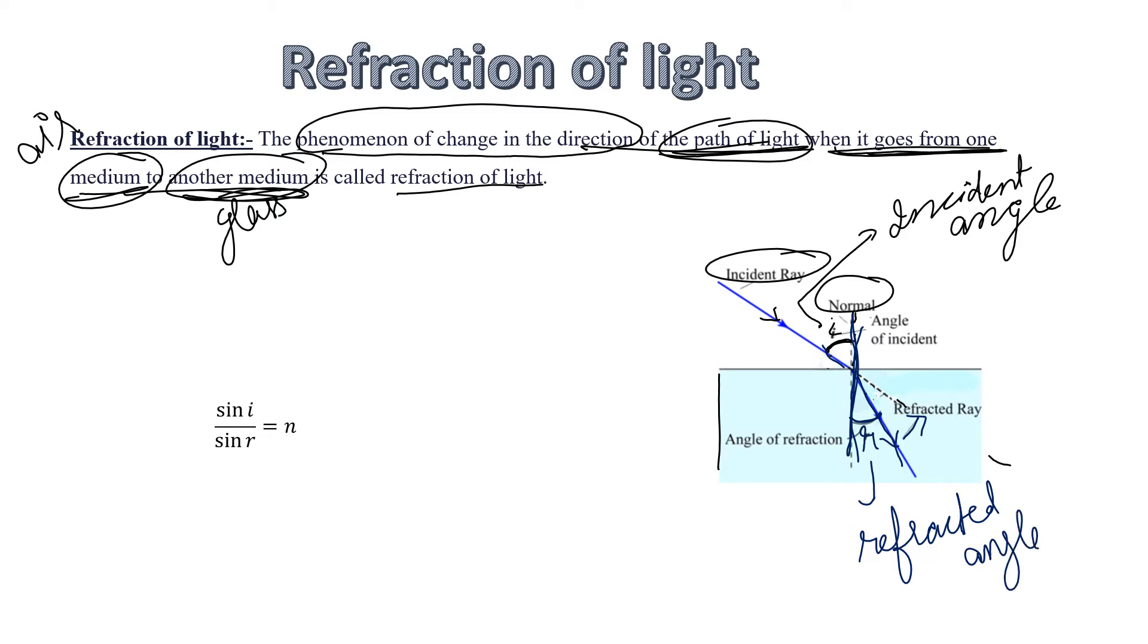When light goes from rarer to denser medium, it bends towards the normal. The angle between the normal and refracted ray is the refracted angle. Air is a rarer medium and glass or water is a denser medium, so light bends toward the normal.